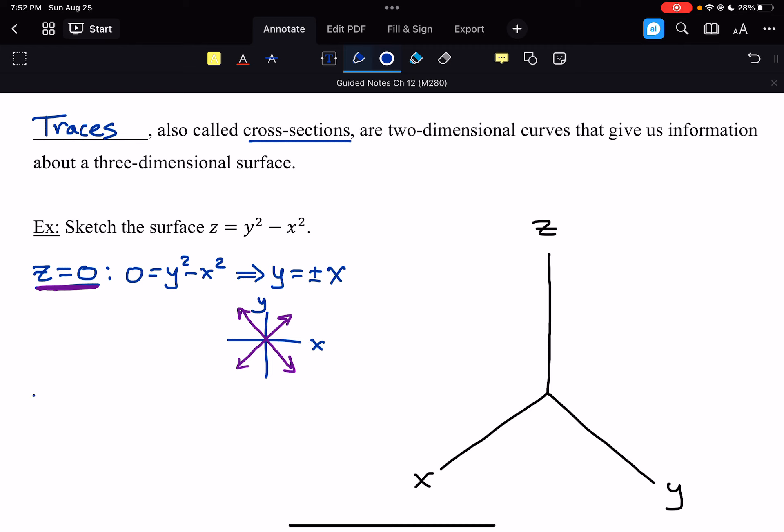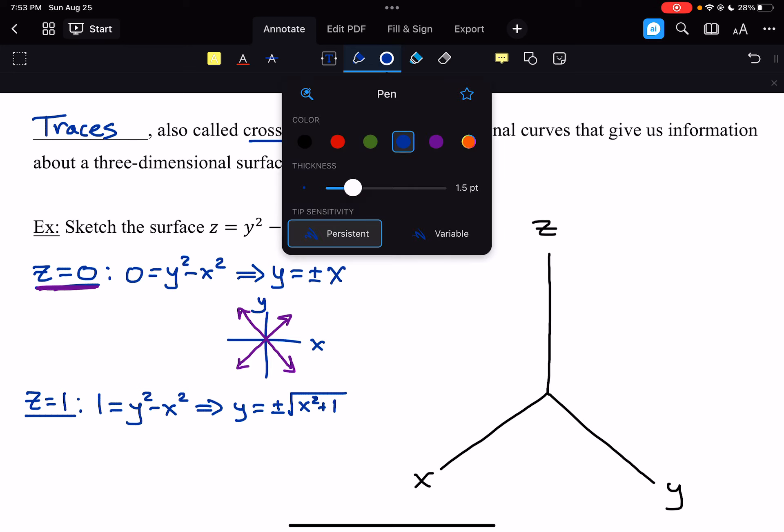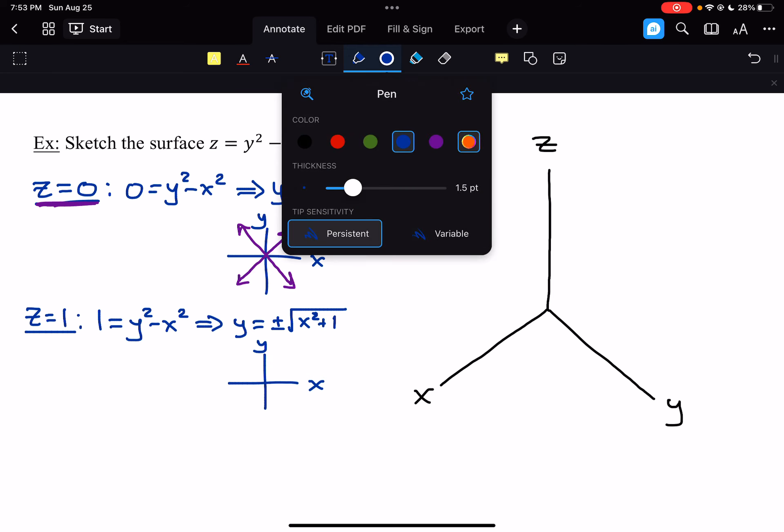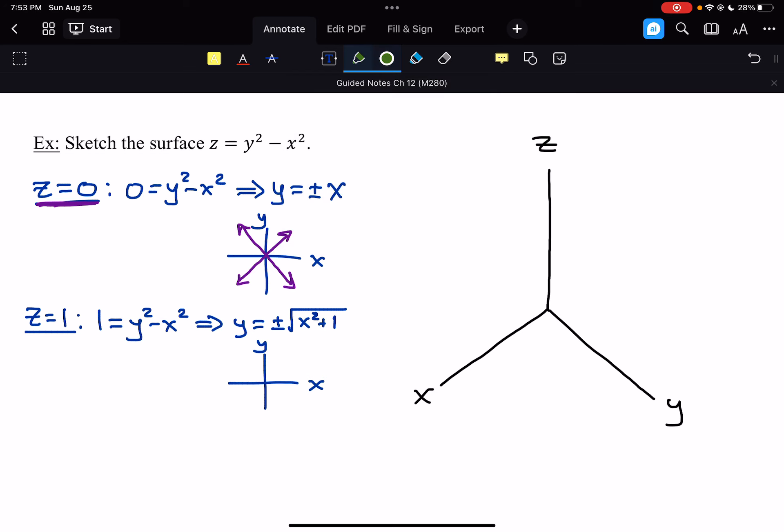Then, let's look at z equals 1. When z is 1, we get 1 equals y squared minus x squared. So, we end up with y equals plus or minus the square root of x squared plus 1. Which is not maybe a shape that we're totally familiar with because we don't use it too often. But this is hyperbolic. It's going to be kind of like this. There's going to be a top half and a bottom half.